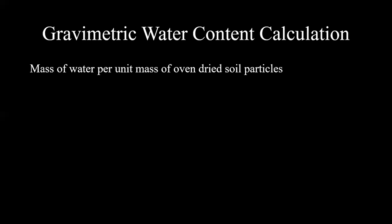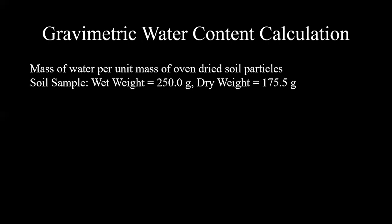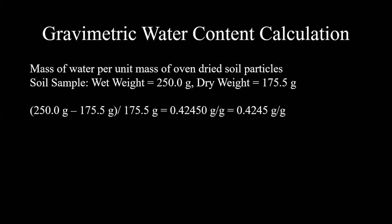Next we're going to calculate gravimetric water content. The definition of gravimetric water content is mass of water per unit mass of oven dried soil particles. To calculate it, we take the wet weight of the soil minus the dry weight, divided by the dry weight, which gives us 0.4245 grams per grams. Gravimetric water content could be unitless but we typically present it in grams per grams.